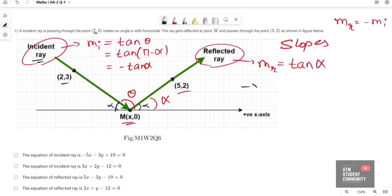Now by seeing this we can conclude that m_R is equal to minus m_I. The formula for slope passing through two points is m_R equals (y2 minus y1) divided by (x2 minus x1).